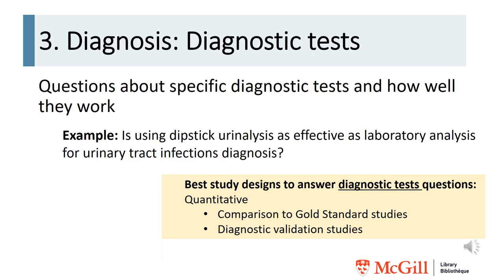The second type of diagnosis question is about diagnostic tests — questions about specific diagnostic tests and how well they work. For example: is using dipstick urinalysis as effective as laboratory analysis for urinary tract infection diagnosis? The best study designs to answer diagnostic tests questions are quantitative: comparison to gold standard studies or diagnostic validation studies.